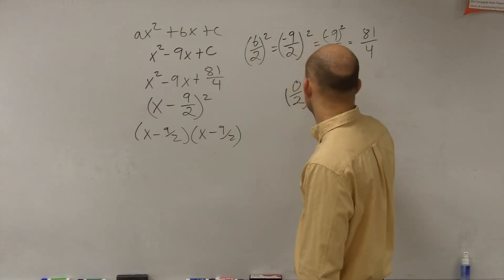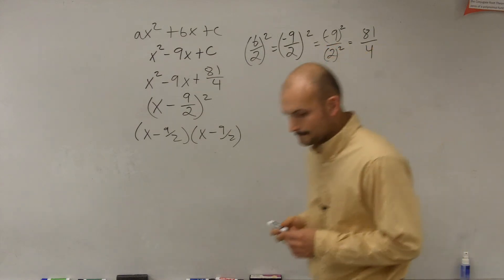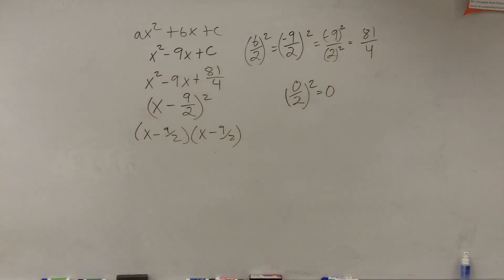If there is no b, then b is 0, so you're going to have 0. All right, so that was number...